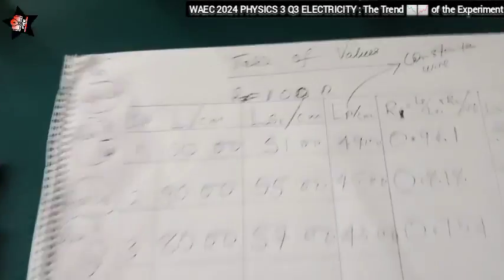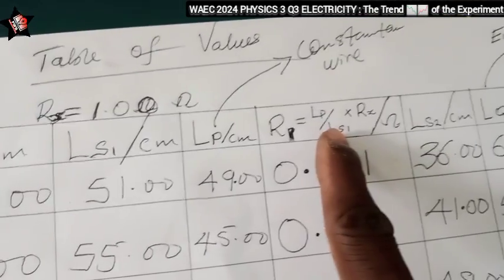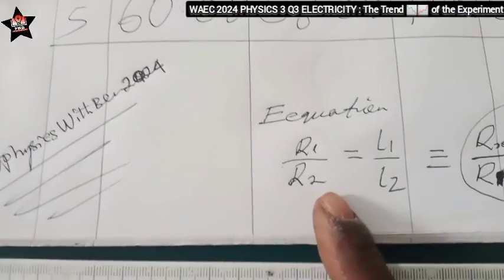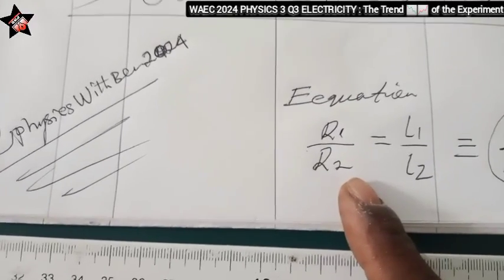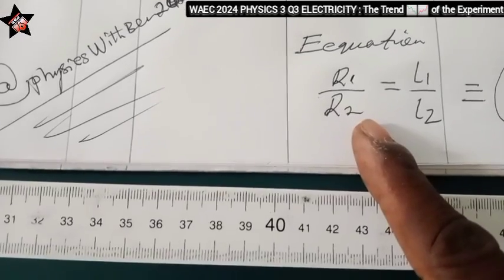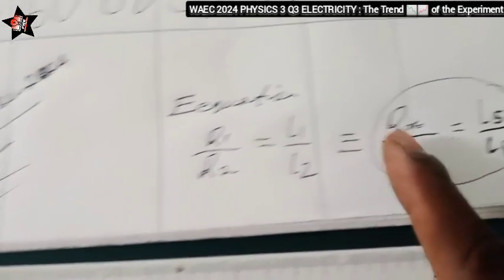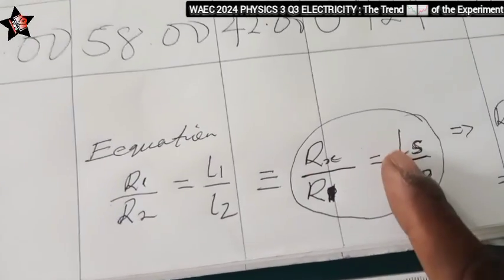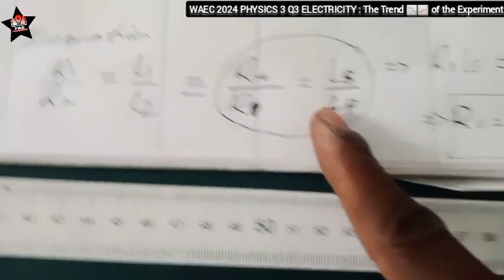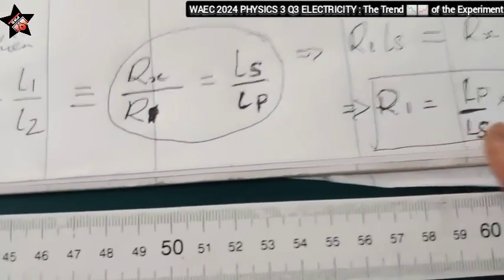This is the equation controlling this experiment, this is it here. And this is the origin of this equation from the meter bridge equation. So the equation has been customized into this, so this equation is congruent to this. So you make R the subject of formula and then you have this.